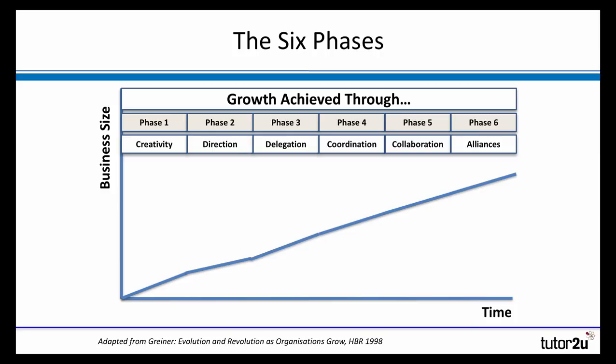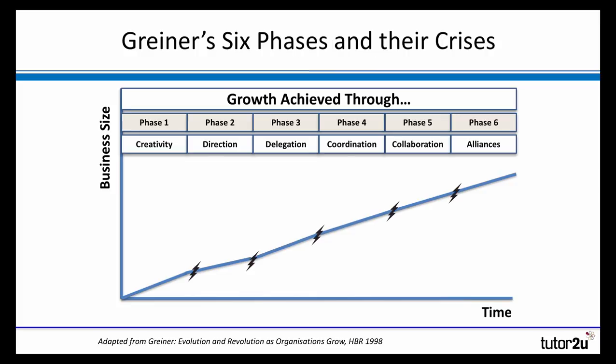The key concept of the model is that the five crises occur as the business transitions between these phases. So for example, as the business moves from the creativity phase at the start through to the direction phase, what is it that leads the business to move from phase one to phase two, from creativity to direction? What was the crisis that leads to that development?